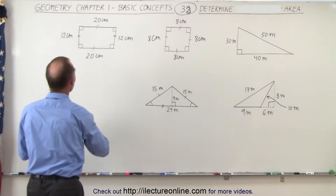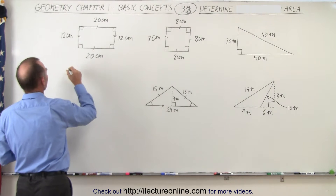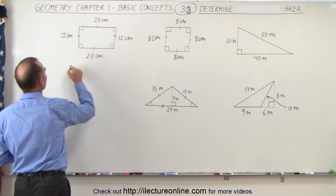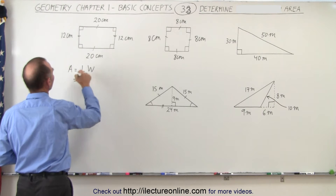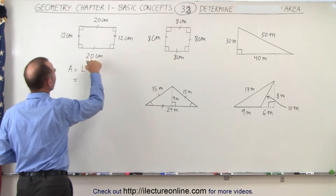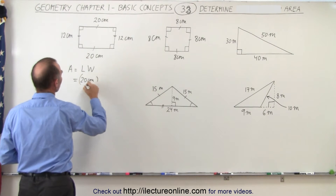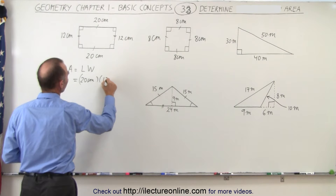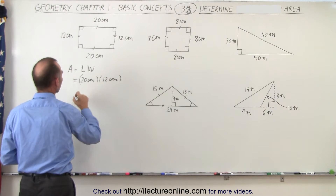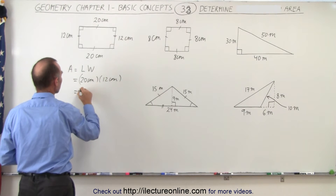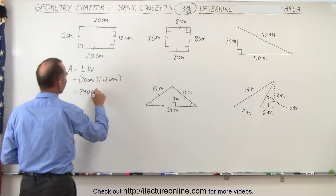To find the area of a rectangle, we say the area is equal to the length times the width. So in this case, the length would be 20 centimeters and the width is 12 centimeters. So that's 240 centimeters squared.